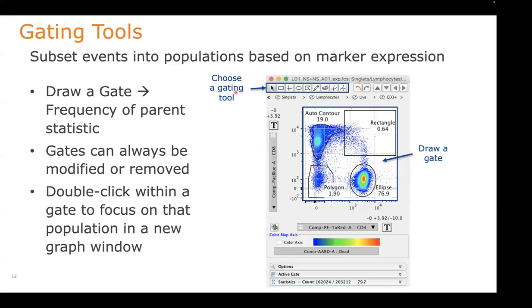Up at the top are different gating tools — for example, rectangle gates, quad gates, ellipse gates, polygons, and auto contour gates. Once you draw a gate, you'll get a frequency-of-parent statistic displayed right there in the graph window. Any time you draw a gate, you can modify it, move it around, or delete it. If it's not in the perfect spot, select that gate, move it around, select a specific vertex and stretch it to resize the gate as needed. Pretty simple to do.